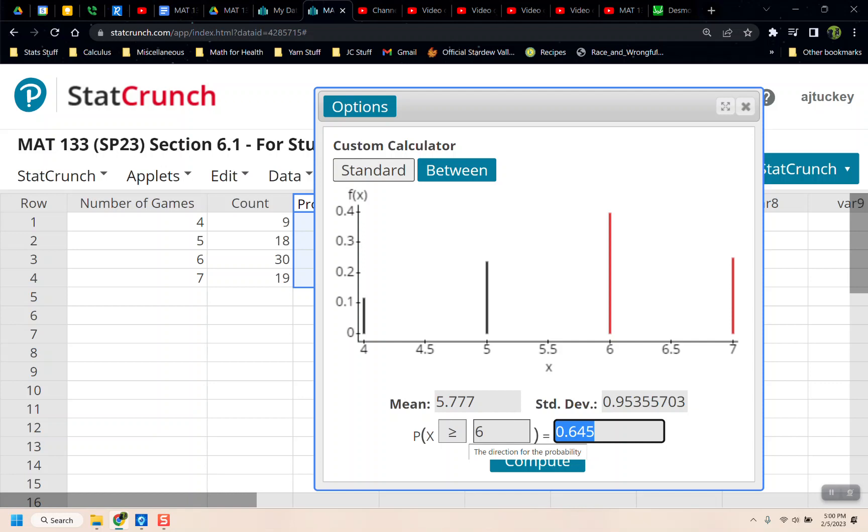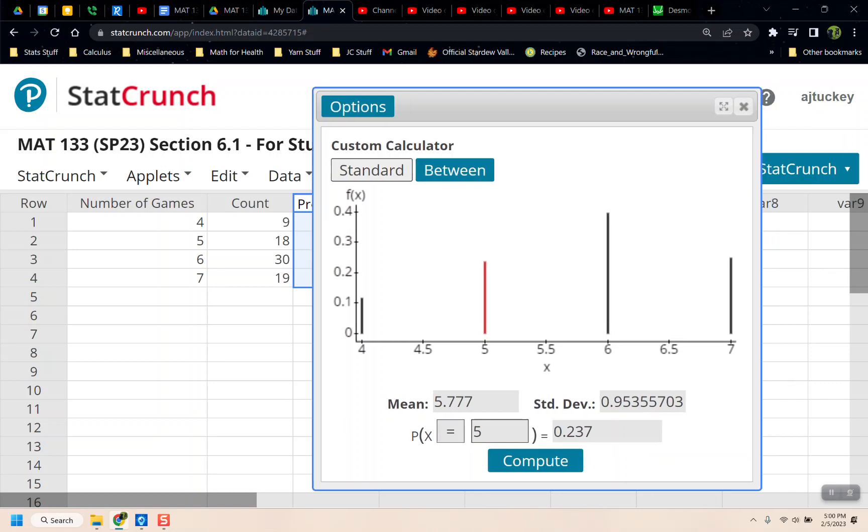So it has a nice little feature. Or if I wanted to do the probability of 5 games, just because I was curious, I could change this to 5 and say Compute, and there it is, it's that bar, which was 0.237. So it's not strictly required, but it's kind of fun to play with. But the mean is right there, and the standard deviation is right there. And you can tell the heights of the bars are the heights of those probabilities.